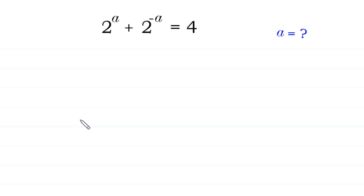Welcome to how to solve this very nice exponential equation: 2 to the power a plus 2 to the power negative a is equal to 4. We need to find all possible values of a.